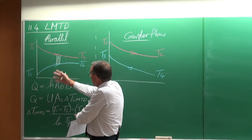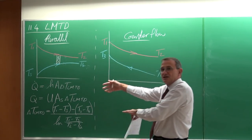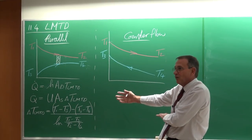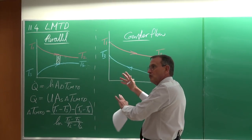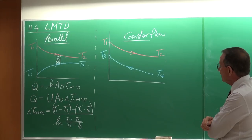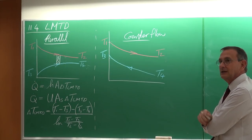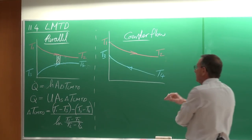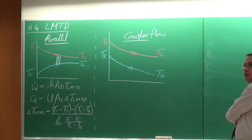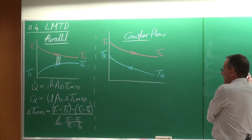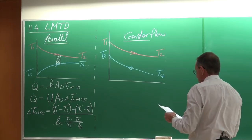A negative LMTD typically happens if you don't draw a sketch for yourself. So always — I would strongly recommend it — draw a very simple sketch, especially when we go to more complicated heat exchangers, and you're going to see why I recommend that just now.